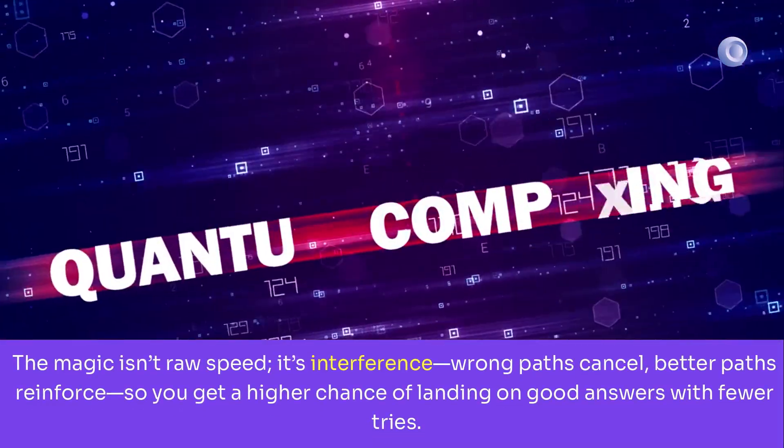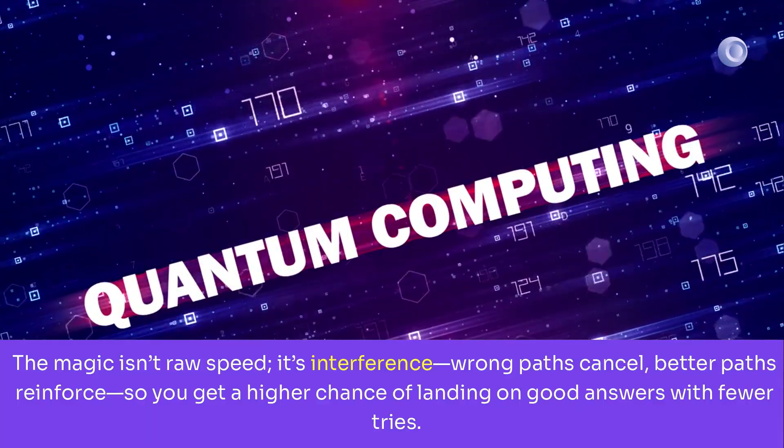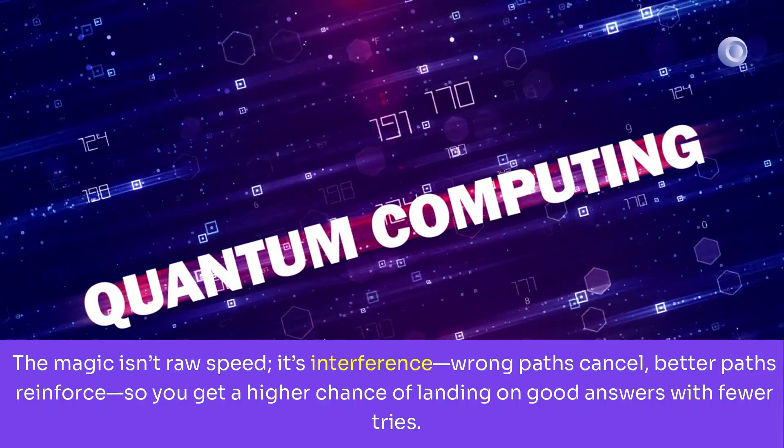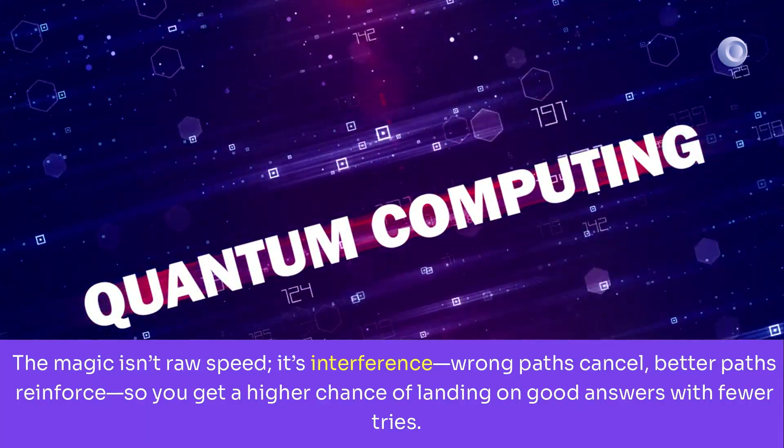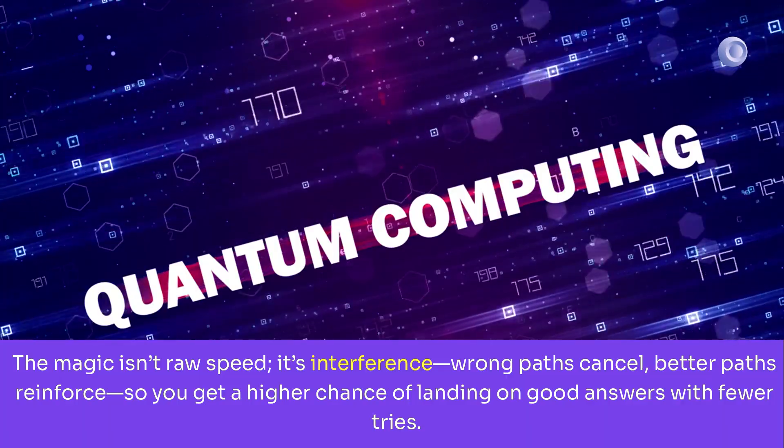The magic isn't raw speed, it's interference. Wrong paths cancel, better paths reinforce, so you get a higher chance of landing on good answers with fewer tries.